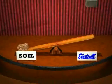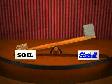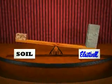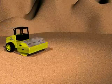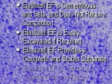Load balancing involves excavating existing heavy material and replacing it with an equal or greater depth of low-density Elastazel EF. No compaction is necessary, as Elastazel EF is a cementitious material which sets on its own. It is also easily excavated if required, providing a complete and stable substrate as a permanent solution that saves time and money.